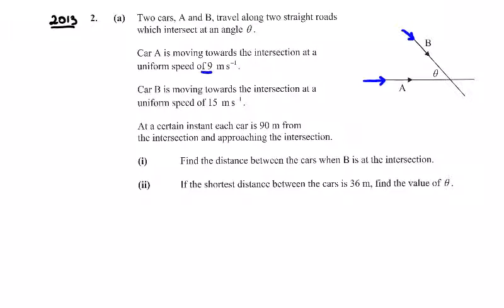Car A is moving with a speed of 9 m/s, B is traveling quicker at a speed of 15 m/s, and at a certain instant each car is 90 m from the intersection. So B is going to get to the intersection first. Distance divided by speed—he's going to get there in 6 seconds.